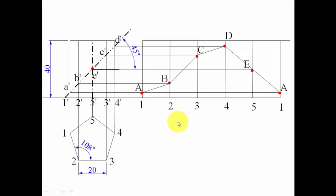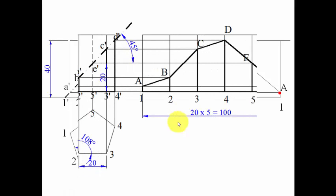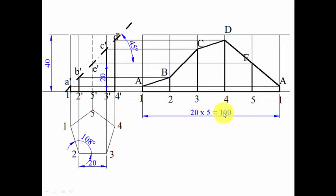That's the development. The total base length is 20 × 5 = 100 mm. That's all from my side. If you have any doubts, write them in the comment section below. If this video added value, please subscribe and recommend the channel. In the next problem, I'll cover the development of a hexagonal prism. Until then, this is Manas Patnaik signing off — take care, have a great day, and keep drawing.